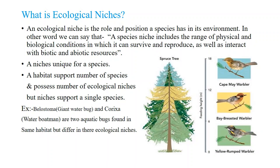A niche is unique for a species and is different from a habitat. The habitat is a broader term and the ecological niche is a smaller, species-specific term. A habitat supports a number of species and possesses a number of ecological niches.